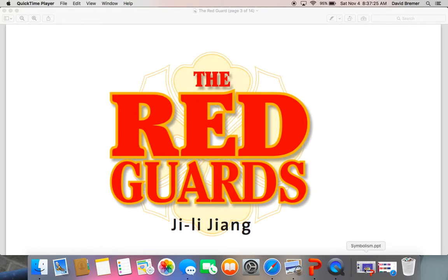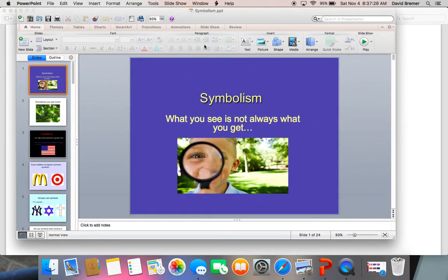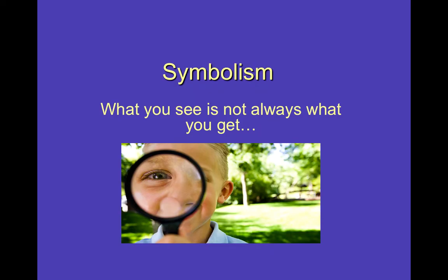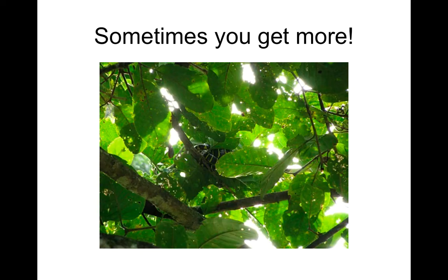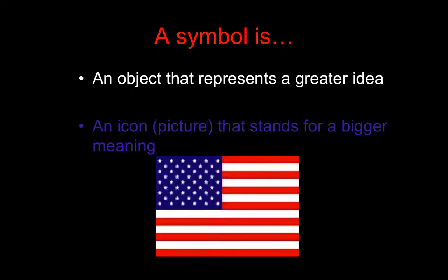I have a short PowerPoint here that I want to go over for symbolism, which is another term we have. Symbolism — what you see is not always what you get. Sometimes you get more. As you can see here, you've got the leaves, and inside there you've got what looks like a green and yellow snake. A symbol is an object that represents a greater idea, an icon or a picture that stands for a bigger meaning.